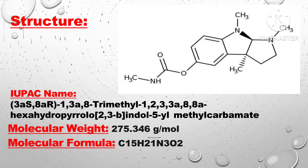The structure is given in the PDF. The IUPAC name is 3AS,8AR — 3A,8-trimethyl-1,2,3,3A,8,8A-hexahydro-hydroxy-propyl-pyrrolo-indole-5-yl ethyl carbamate. Molecular weight is 275.346 grams per mole. Molecular formula is C15H21N3O2.